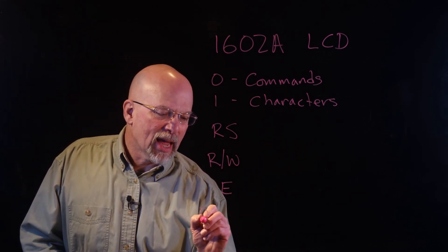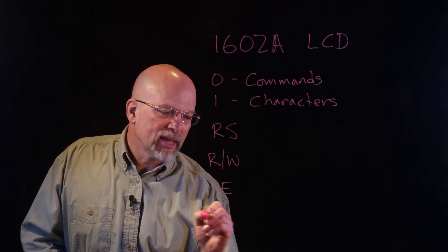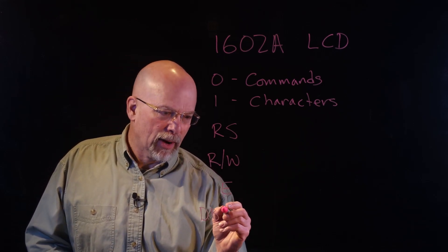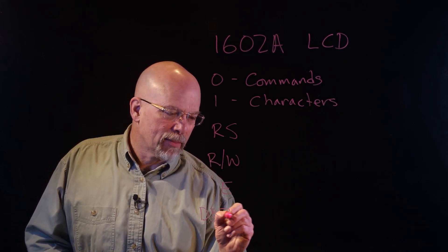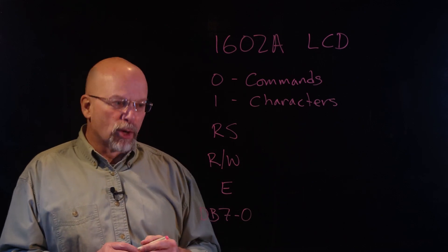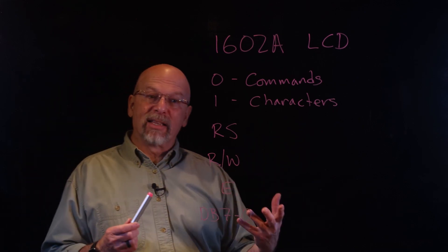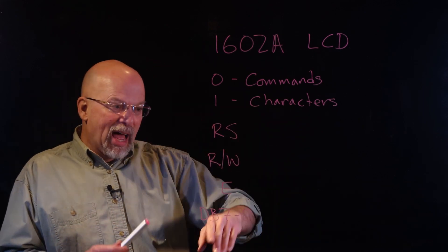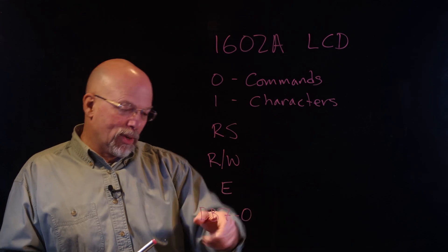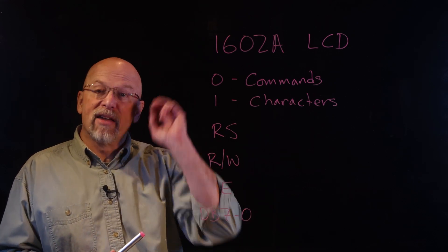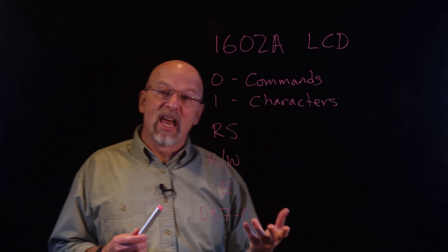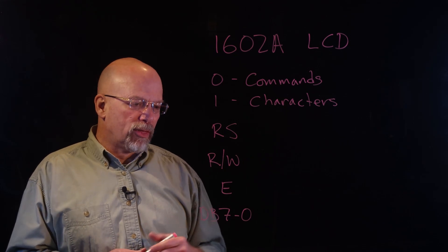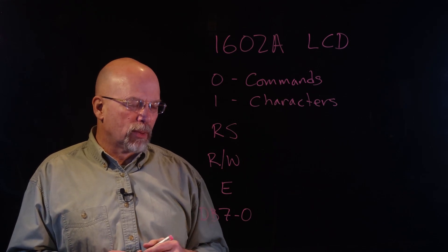Lastly, we have these data lines — DB standing for data bit. So we have data bits DB7 through DB0, which is a byte. So we have 11 lines total that we're going to be using to communicate with the LCD display.